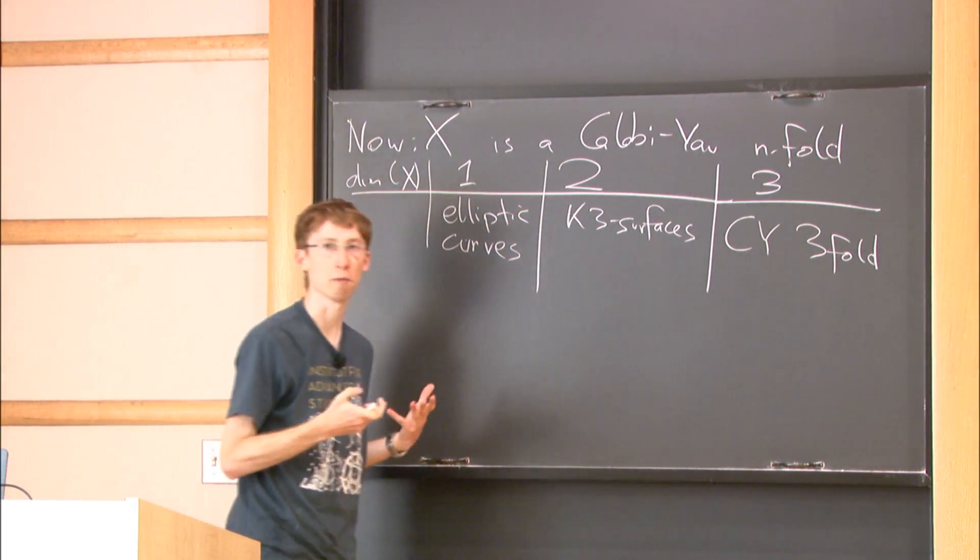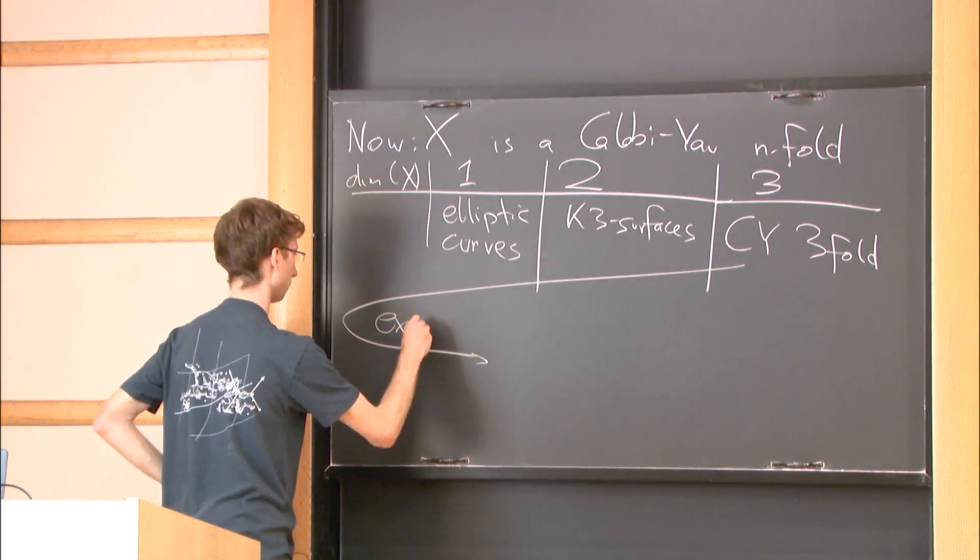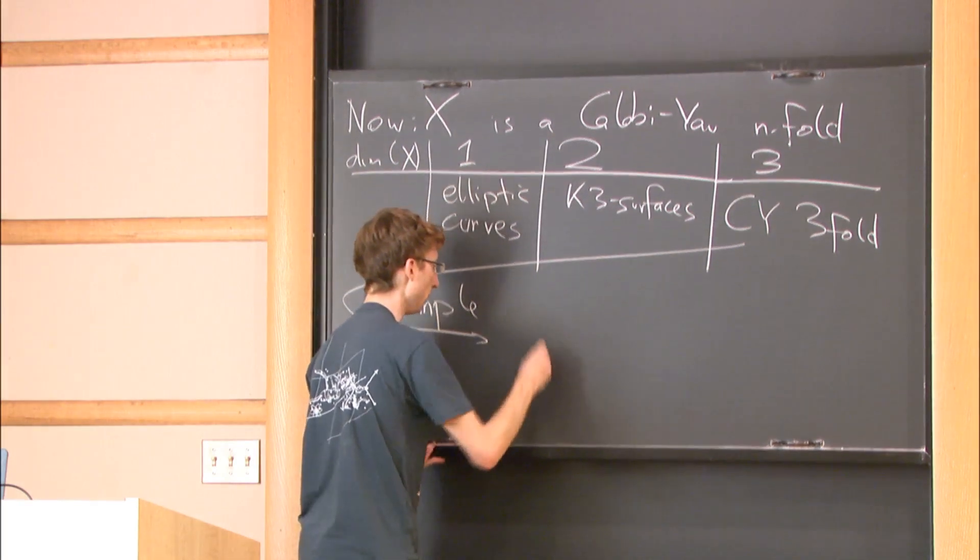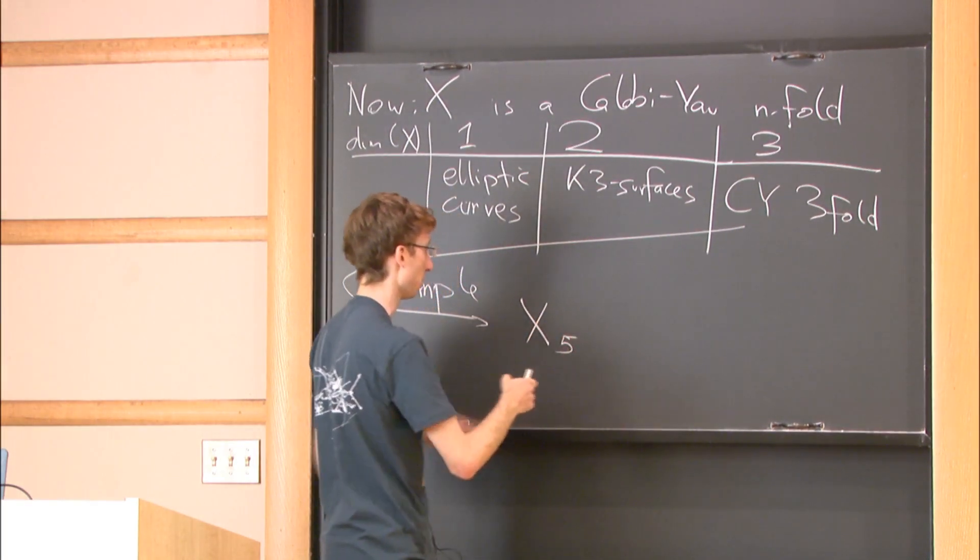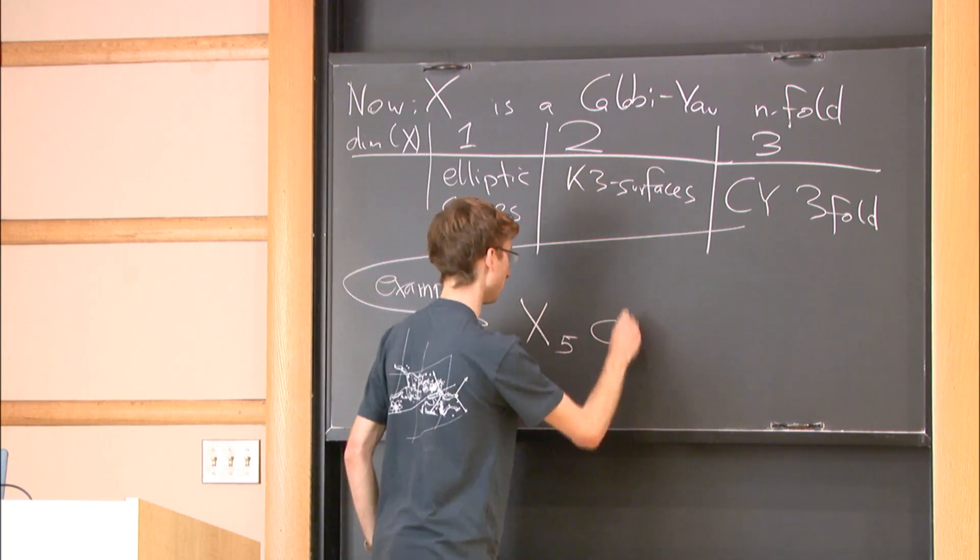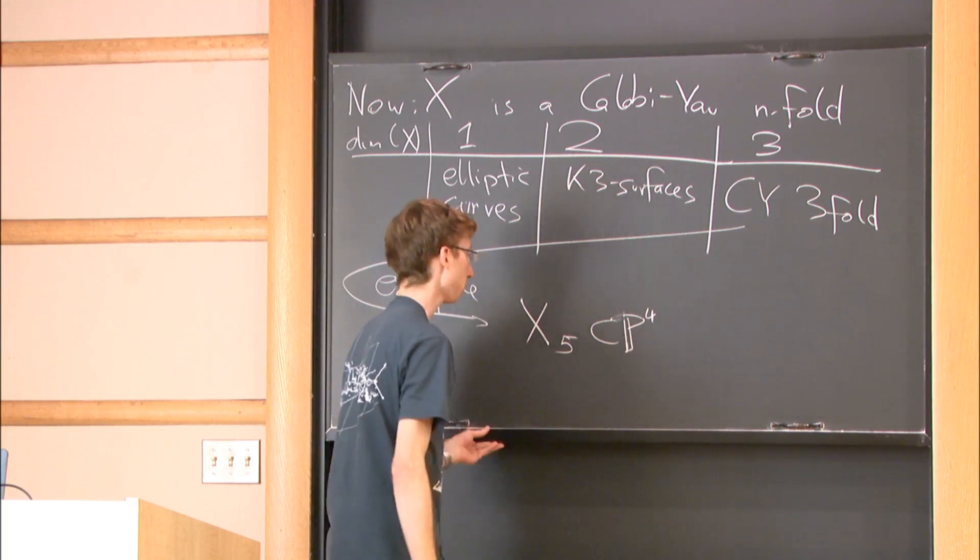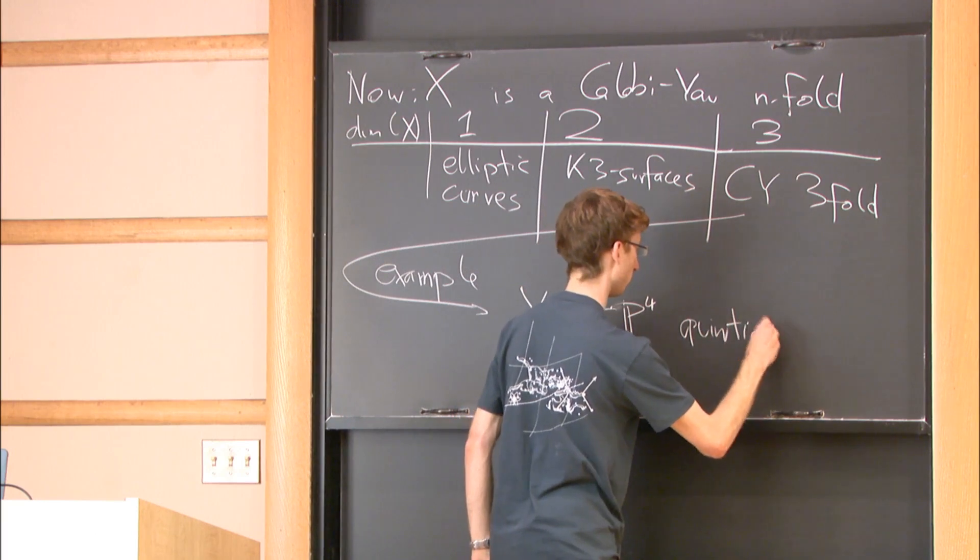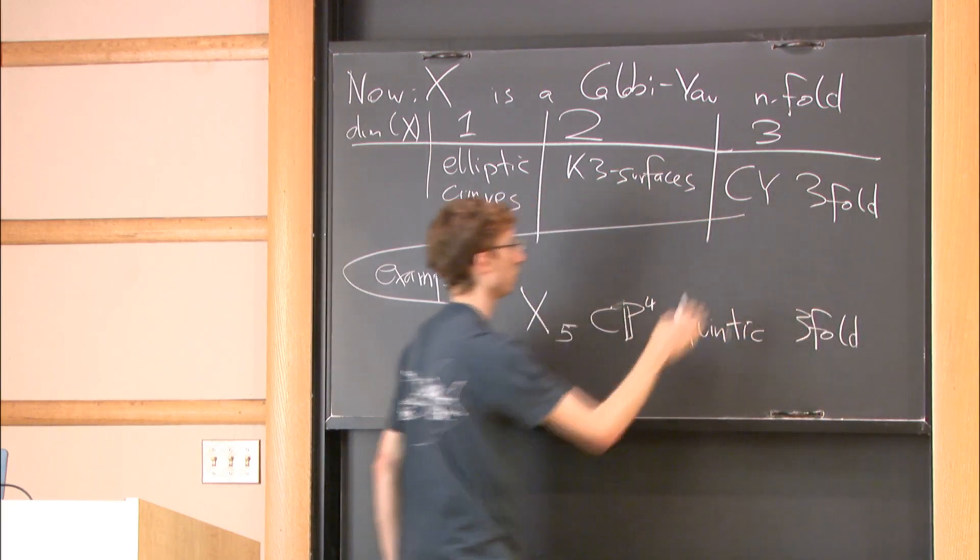Maybe one example. Let me give one example. One simple example would be - and that appears in the title - if you take a degree 5 equation inside CP4, that is an example called a quintic threefold. This is an example of a Calabi-Yau threefold.